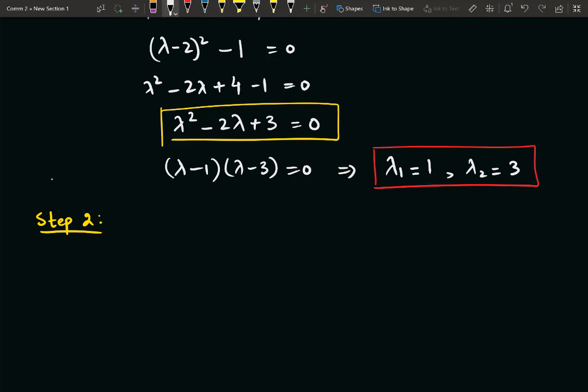And to find eigenvectors, the governing equation is similar. It is (λᵢI - A) multiplied by x, which is the eigenvector, and it is equal to 0.